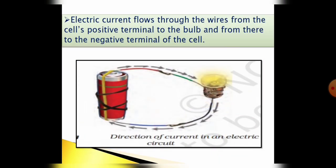Next, electric current flows through the wires from the cell's positive terminal to the bulb and from there to the negative terminal of the cell. So this is the direction of the current in a circuit. So this was all about electric circuit.